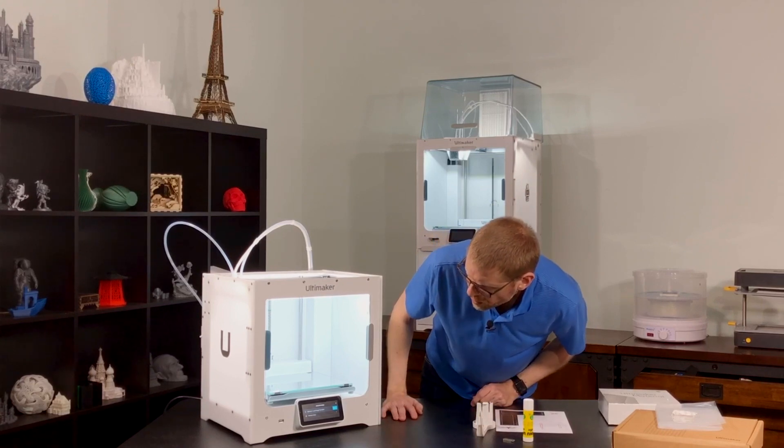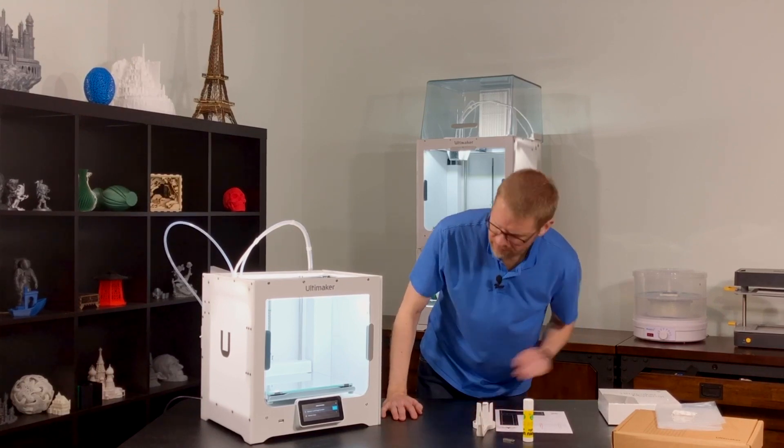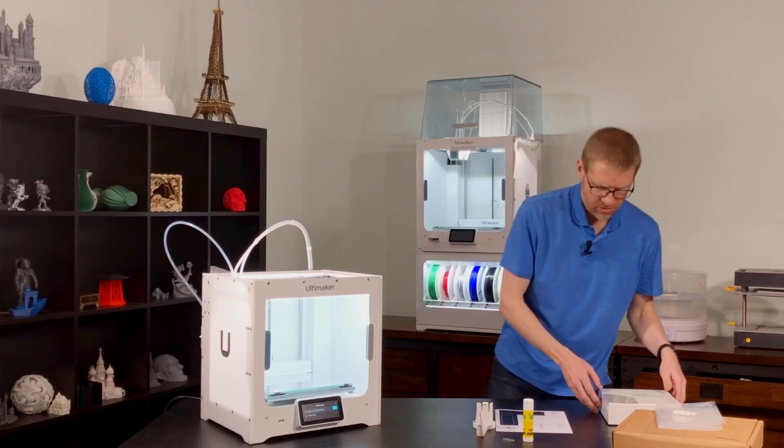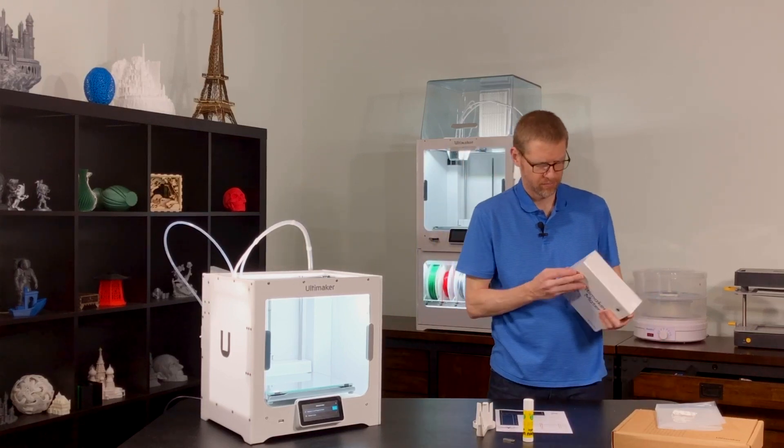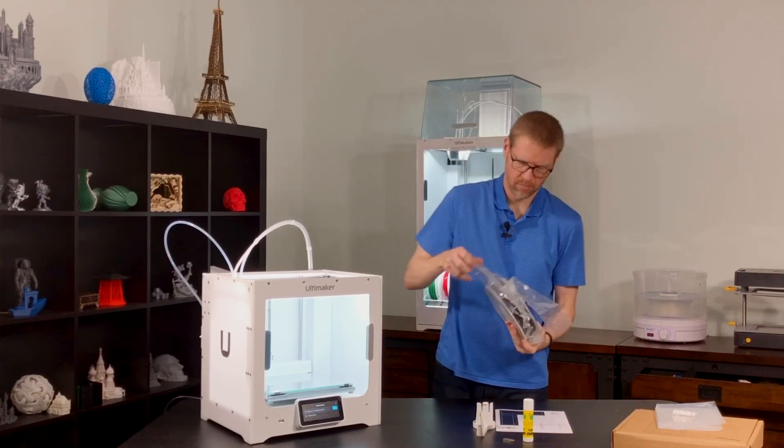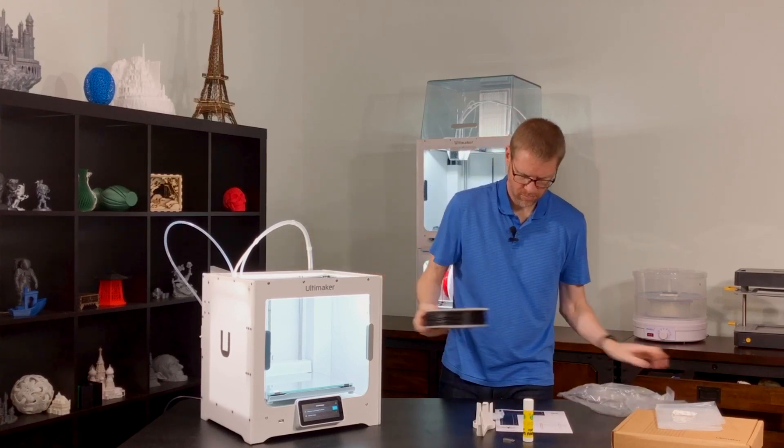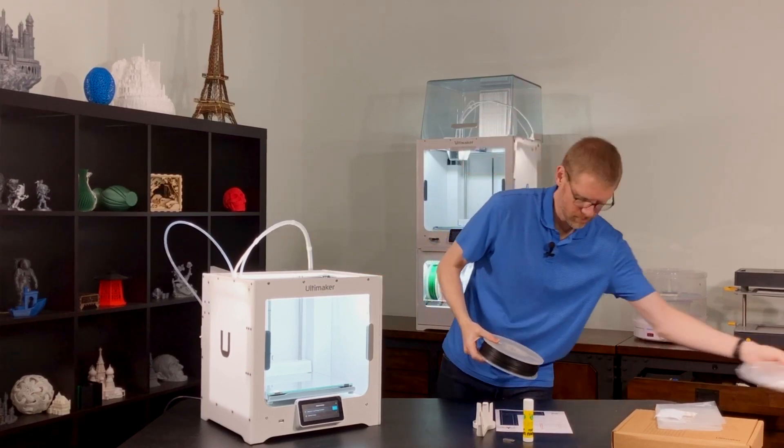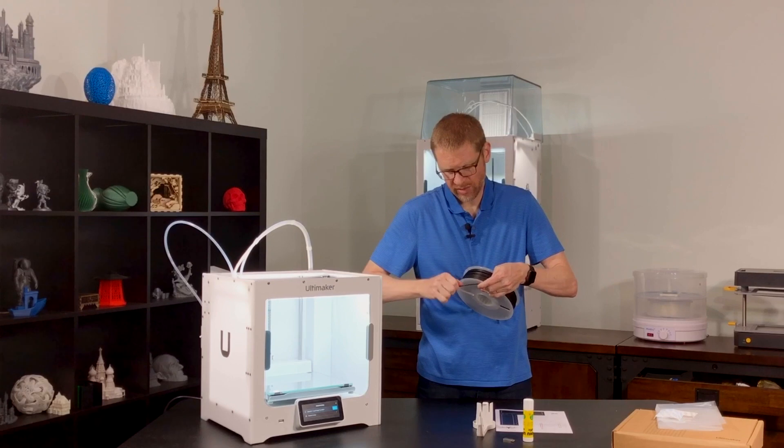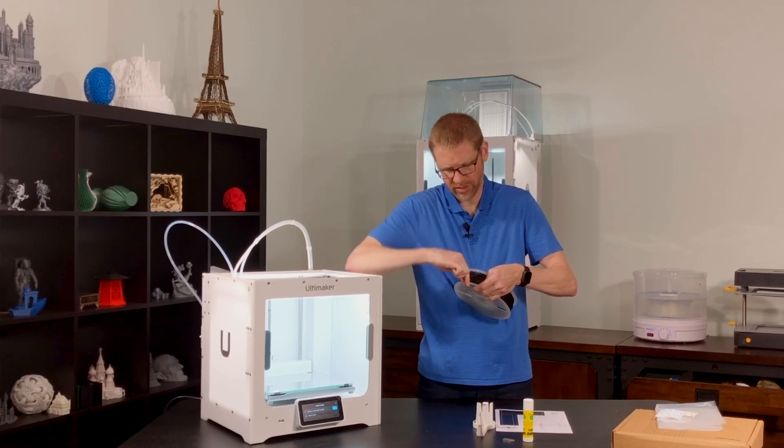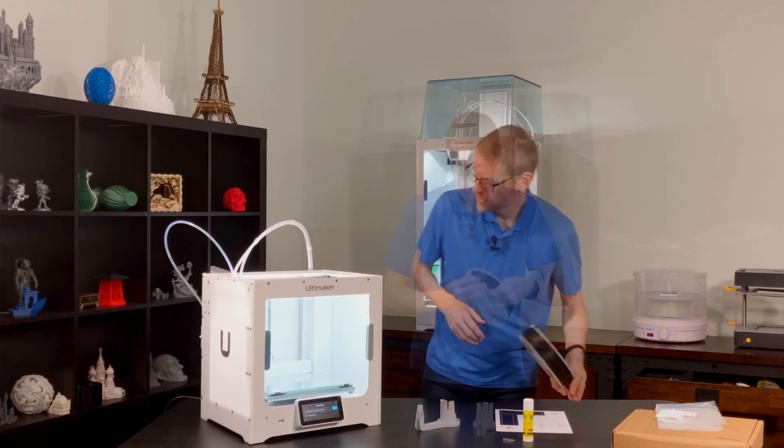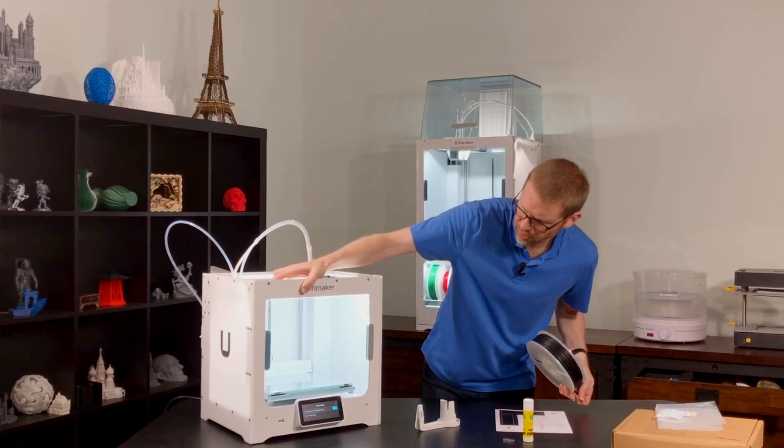And now it says material one, load tough PLA black. That's the other spool that it came with. So let's open this box. Same procedure here. I want to straighten the end out a little bit. I'm going to flip the printer around.